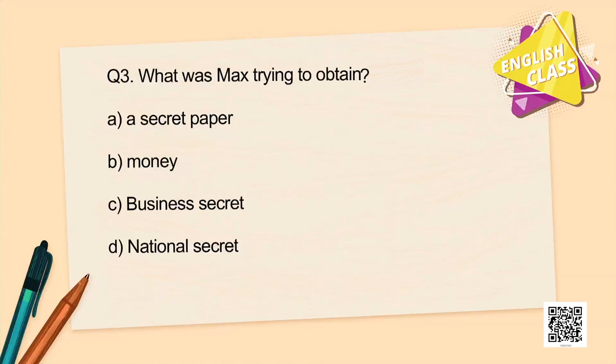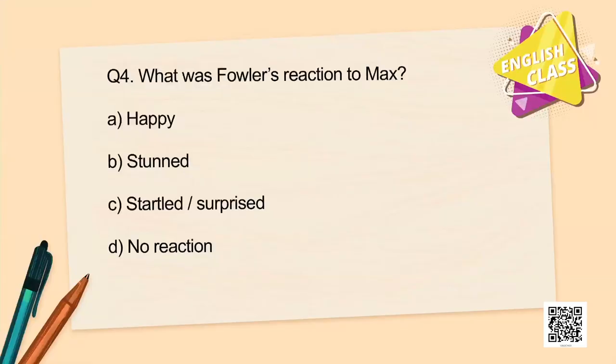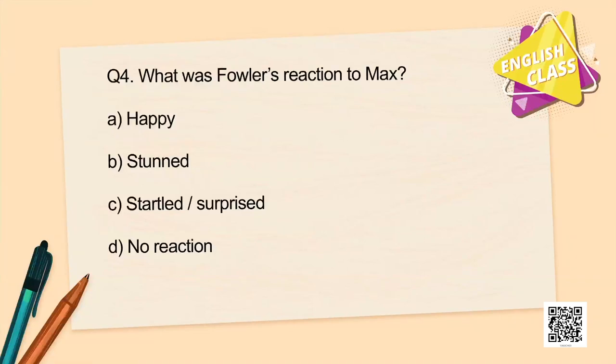Question 3: What was Max trying to obtain — a secret paper, money, a business secret, or a national secret? Some of you may have marked 'a secret paper,' which is correct; some may have marked 'a national secret,' which is also correct — if we read between the lines, Ossible was a spy and spies work for a country. Question 4: What was Fowler's reaction to Max — happy, stunned, startled, or no reaction? You have to pay close attention. Fowler was surprised; 'stunned' is also correct, as the chapter says he was pale — pale meaning white-faced when you are in shock.